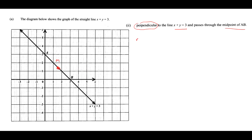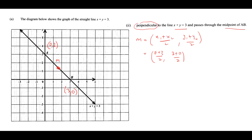The midpoint formula is: midpoint equals (x1 plus x2)/2, (y1 plus y2)/2. The coordinates of A are (0, 3) and the coordinates of B are (3, 0) — we always write the x value first. So the midpoint is (0 plus 3)/2 and (3 plus 0)/2, which gives us (3/2, 3/2).